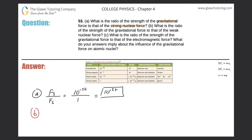Now letter B: what is the ratio of the strength of the gravitational force to that of the weak nuclear force? Again, we look up the numbers in the table. The gravitational force is 10 to the minus 38, and the weak nuclear force is 10 to the minus 13.